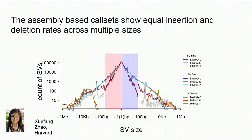Mapping assemblies back allows full-scale variation detection from tens of kilobases down to two base pairs. Comparing this assembly-based approach to high-coverage Illumina sequencing with multiple callers: there's decent agreement between 1 and 15 base pairs for small insertions and deletions, but between about 15 and 500 base pairs, there's a large increase in sensitivity using the assembly-based approach versus a typical Illumina sequencing dataset.